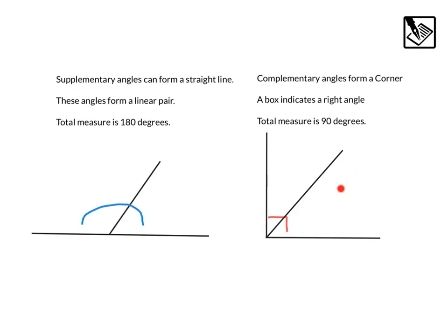Our first two are supplementary and complementary angles. Supplementary angles can form a straight line if we put those angles together. These two angles below form a linear pair, making a line, and the total measure is half of a circle or 180 degrees.